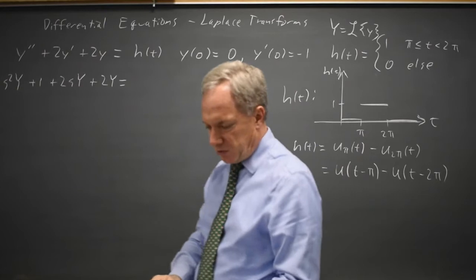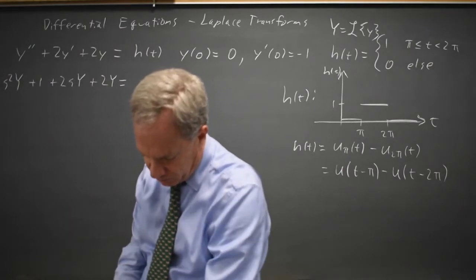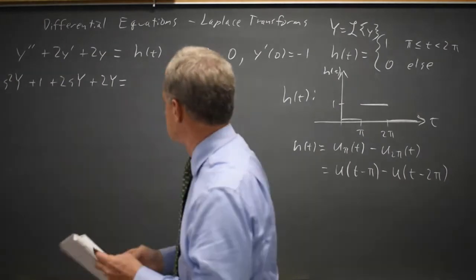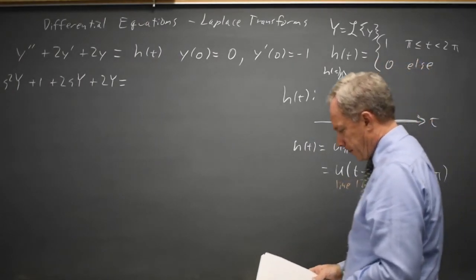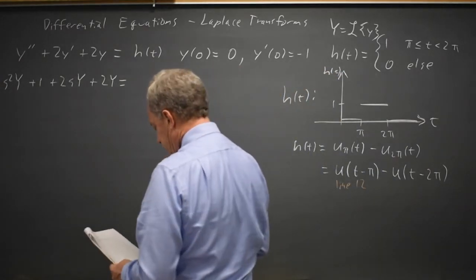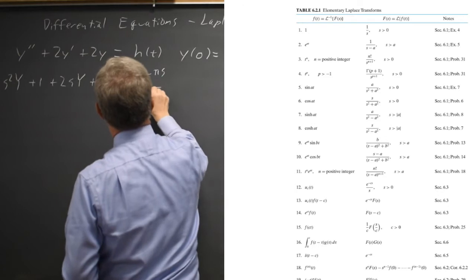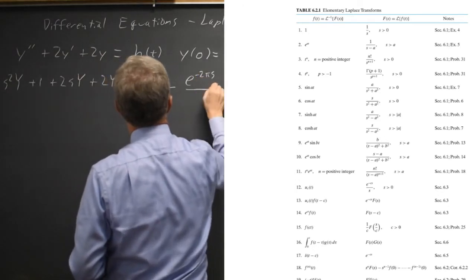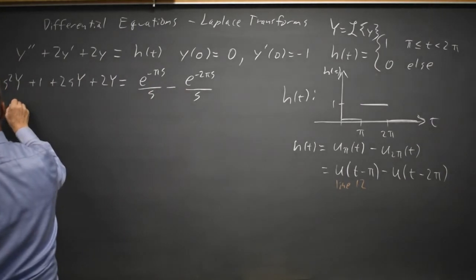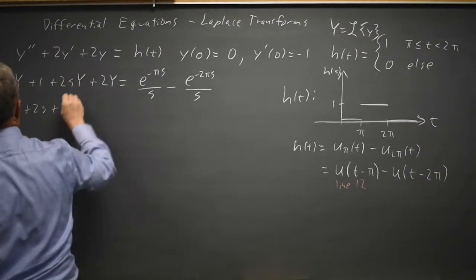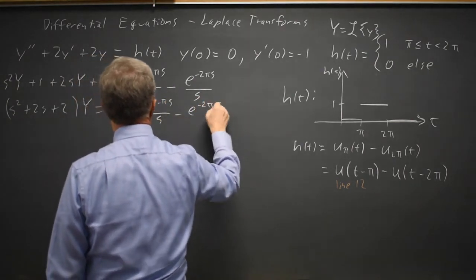In my table of Laplace transforms that would be line 12. The transform of u_c(t) is e to the negative cs over s. So that is e to the negative pi s over s, minus e to the negative 2pi s over s.